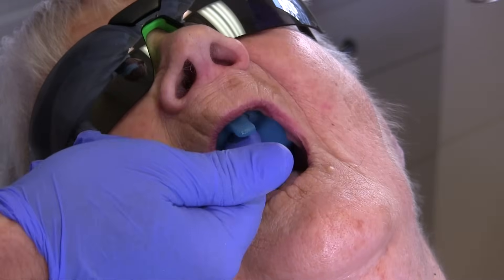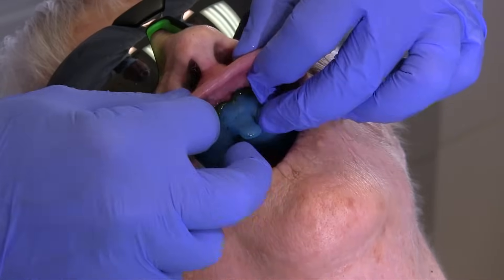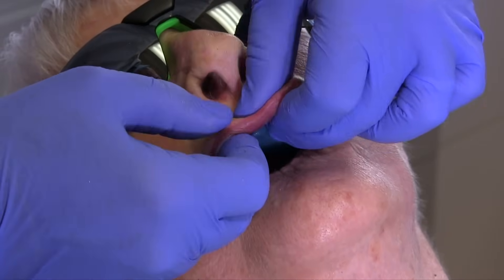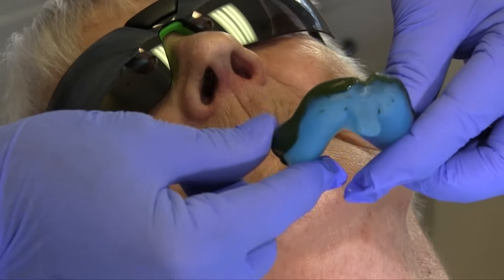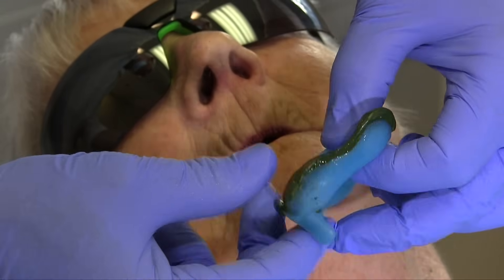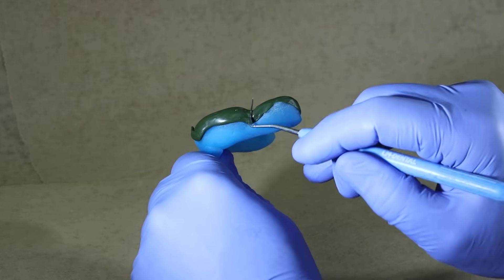Border mold the maxillary labial frenum by pulling the lip outward and straight downward in an exaggerated fashion. Be careful not to pull the frenum to one side. When complete, the labial frenum should be narrow and distinct, while the buccal frenum are normally broader.